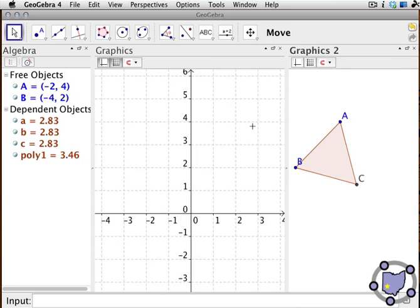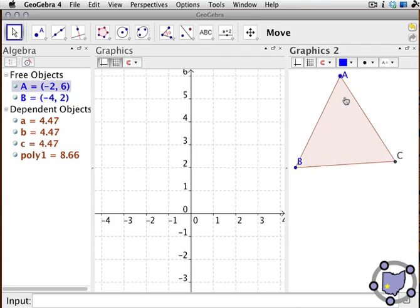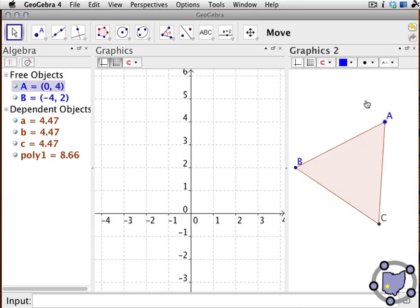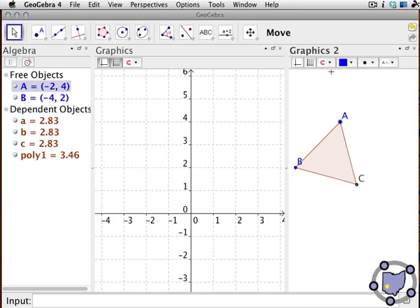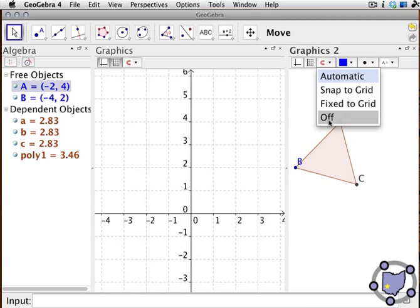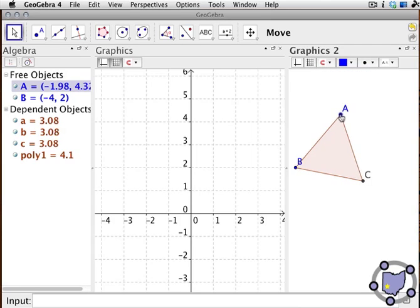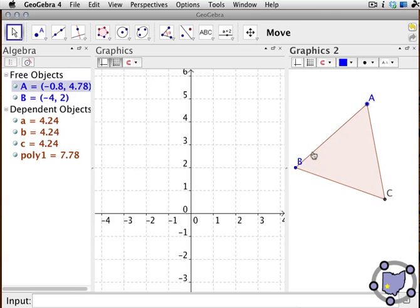So to verify this, you can drag points A or B around. Notice that when you do this, A, B, and C change. I'd like to turn the snap to grid off to give a smoother drag. Notice how A, B, and C are always the same length. And poly 1 is the area of the shape.